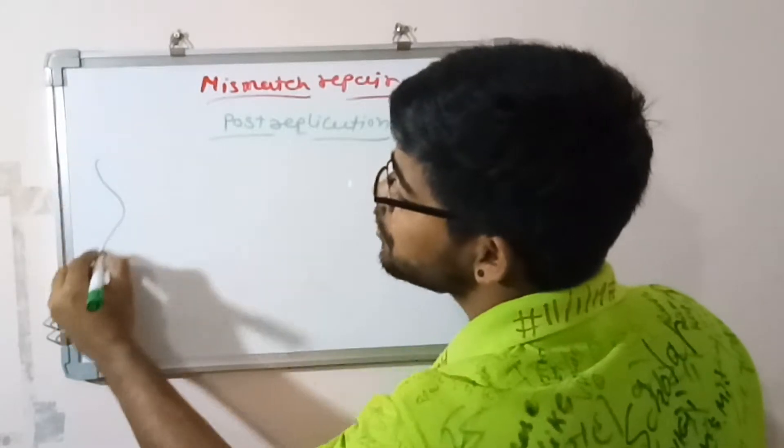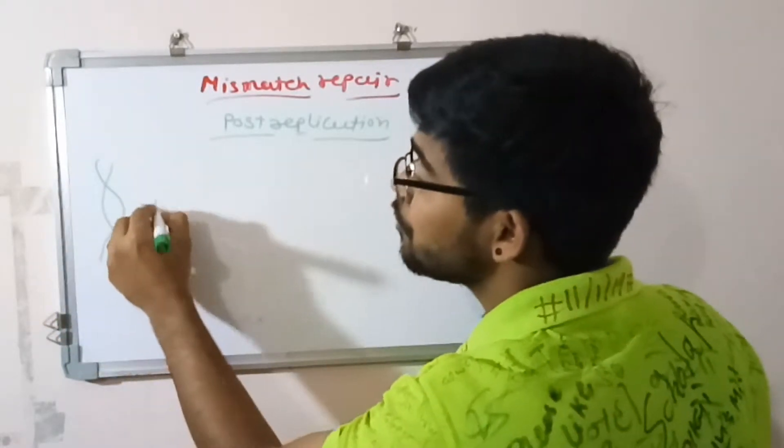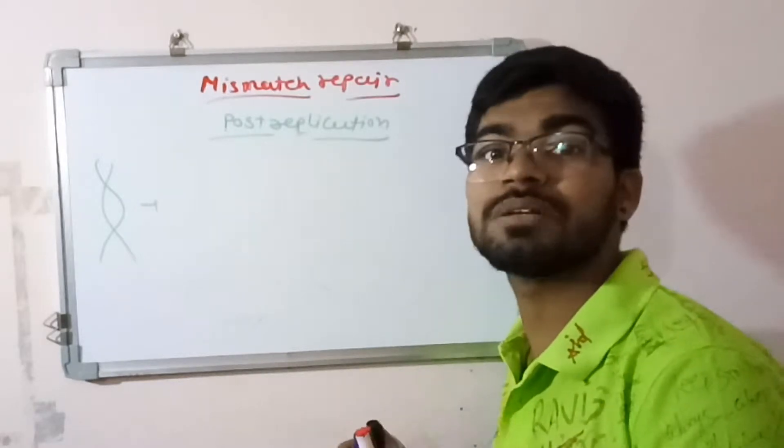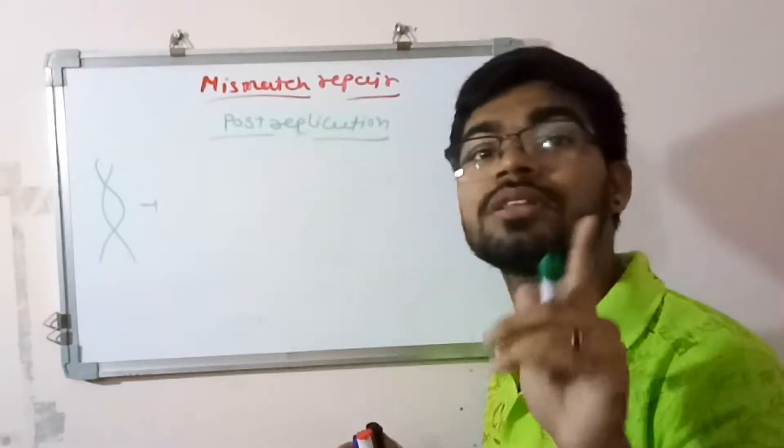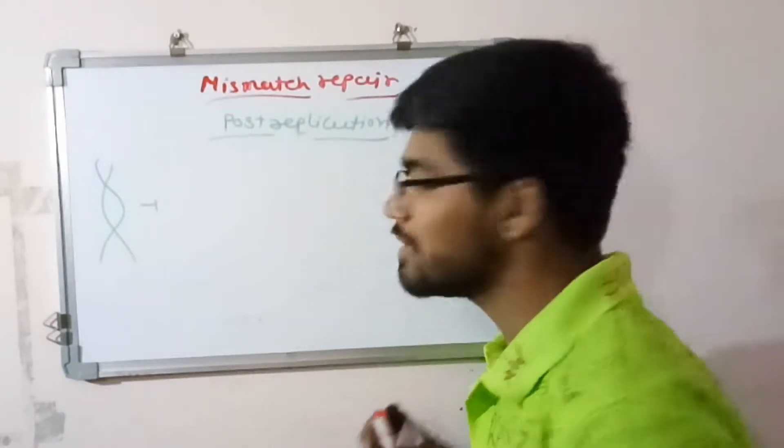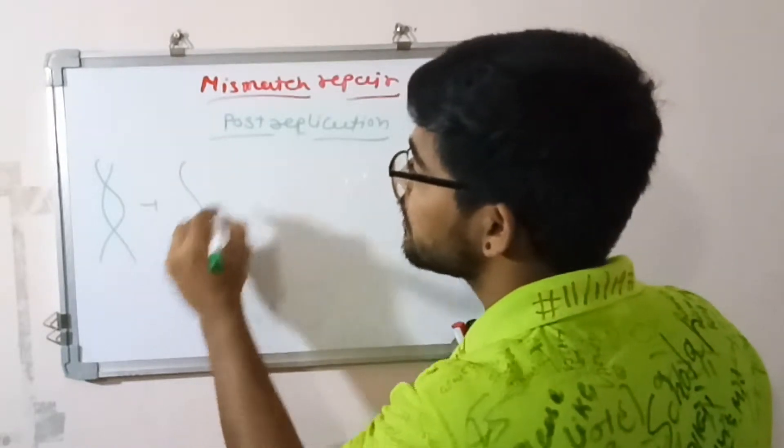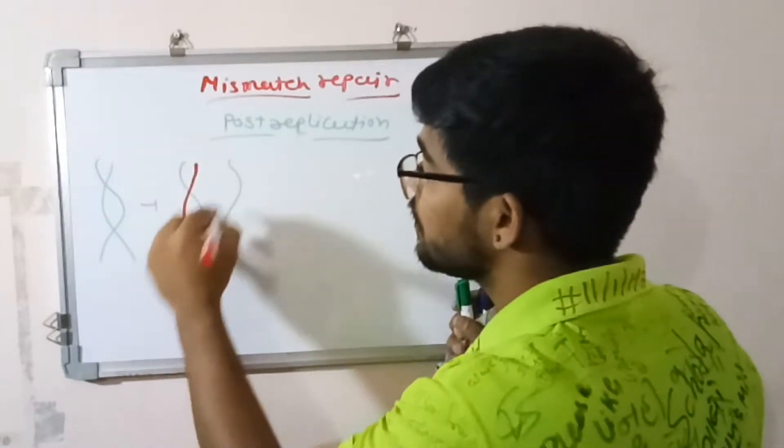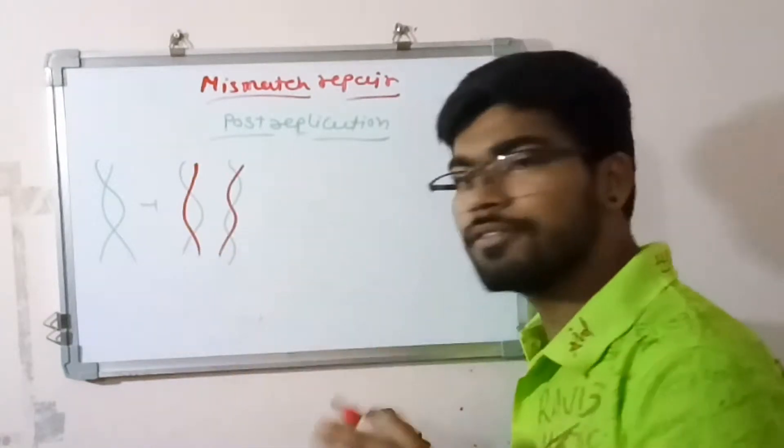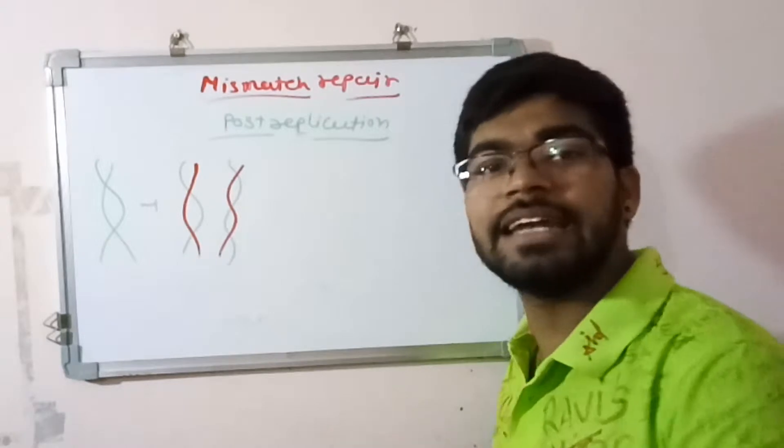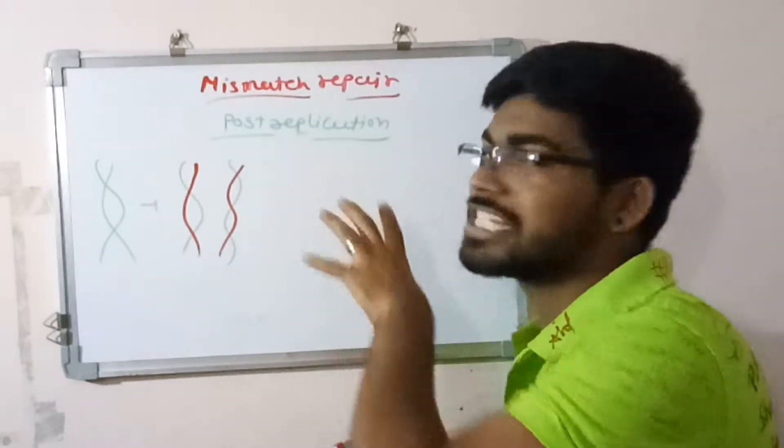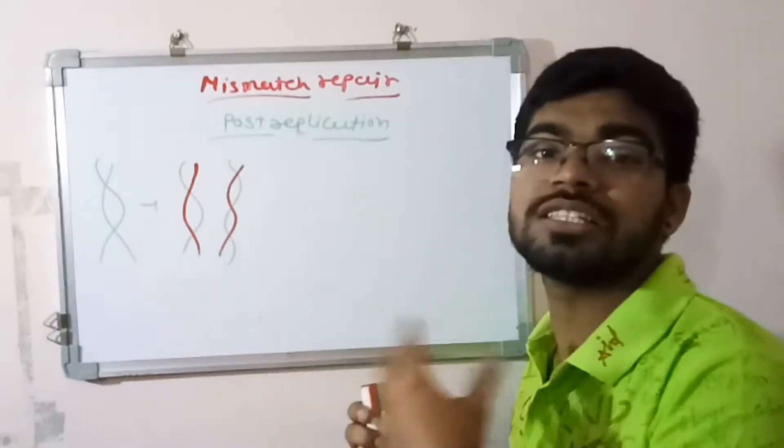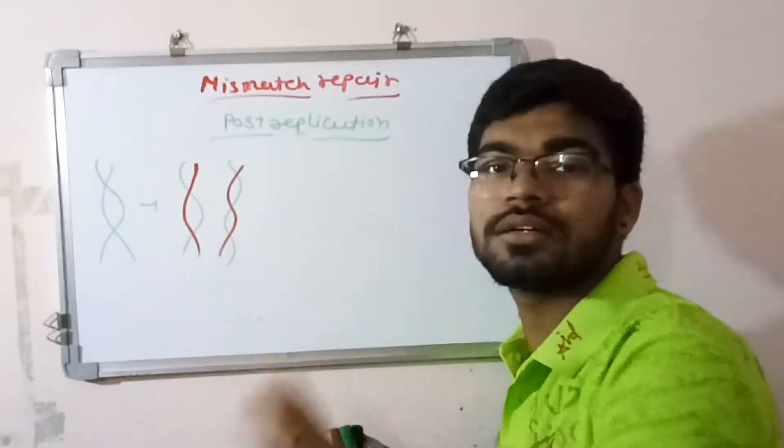The damage happened during the replication and it is solved by this mechanism just after the replication. For example, here the two strands of the DNA which got separated, each serve as the template during the replication. The new strand is synthesized onto it, and if any damage occurs or misbase pair addition occurs, it occurs only on the newly synthesized strand.